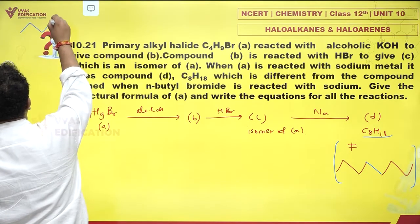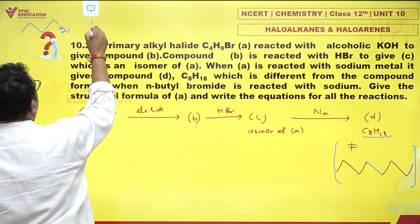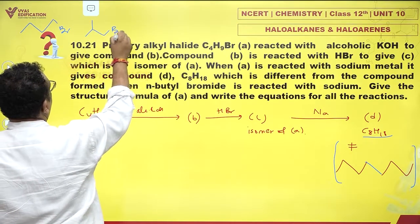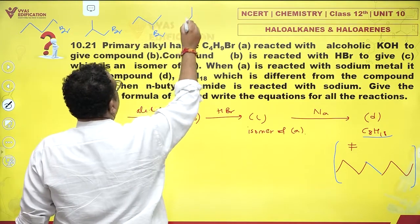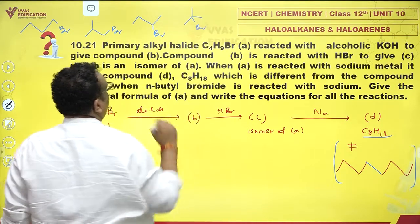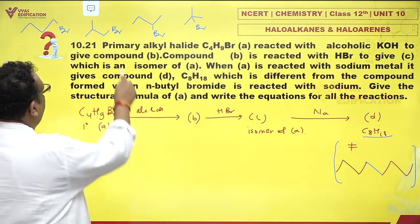Well, there is an n-butyl group 1, 2, 3, 4. Then there is an isobutyl group. Then there is a secondary butyl group, and then there is a tertiary butyl group. So I could have had these four options, but I am being told that this is primary.